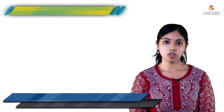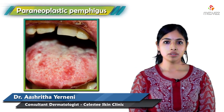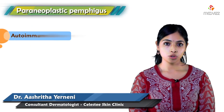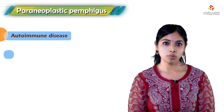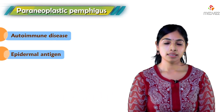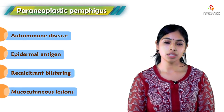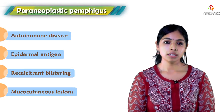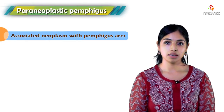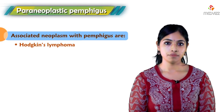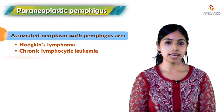The next entity is paraneoplastic pemphigus. It is an autoimmune disease characterized by autoantibodies to epidermal antigens, with recalcitrant blistering and mucocutaneous lesions in the setting of an underlying neoplasm. The neoplasms most commonly associated with paraneoplastic pemphigus are non-Hodgkin's lymphoma, chronic lymphocytic leukemia, and Castleman's tumor.